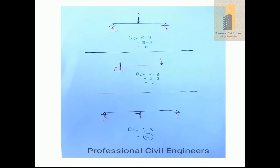Another example is statically indeterminate by one degree. There are two reactions at hinge support, one at roller, and one at another roller — so four minus three equals one. We cannot analyze this beam by equilibrium equations. Since it is an indeterminate structure, we have to use the force method or displacement method, which we will define later.